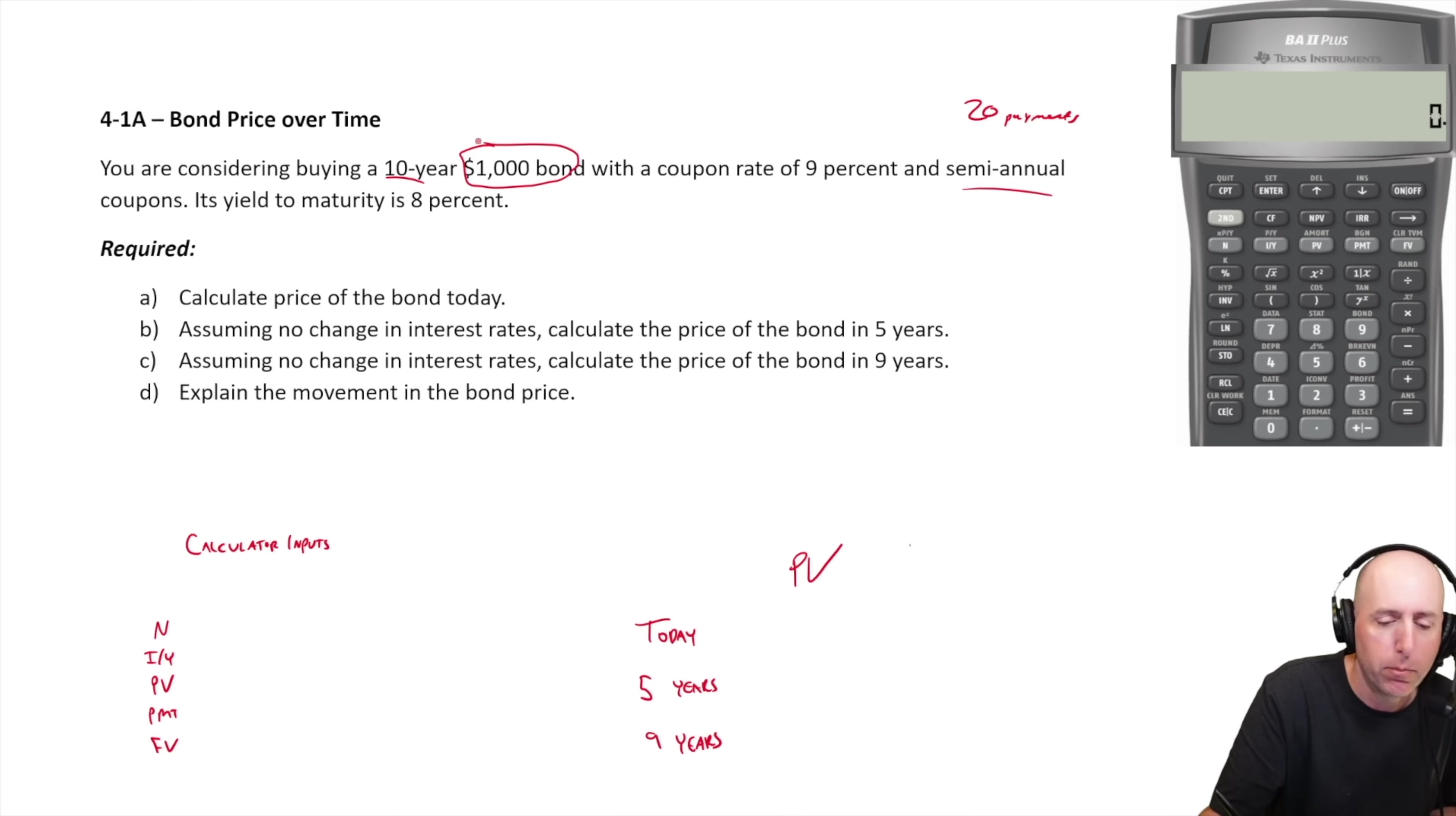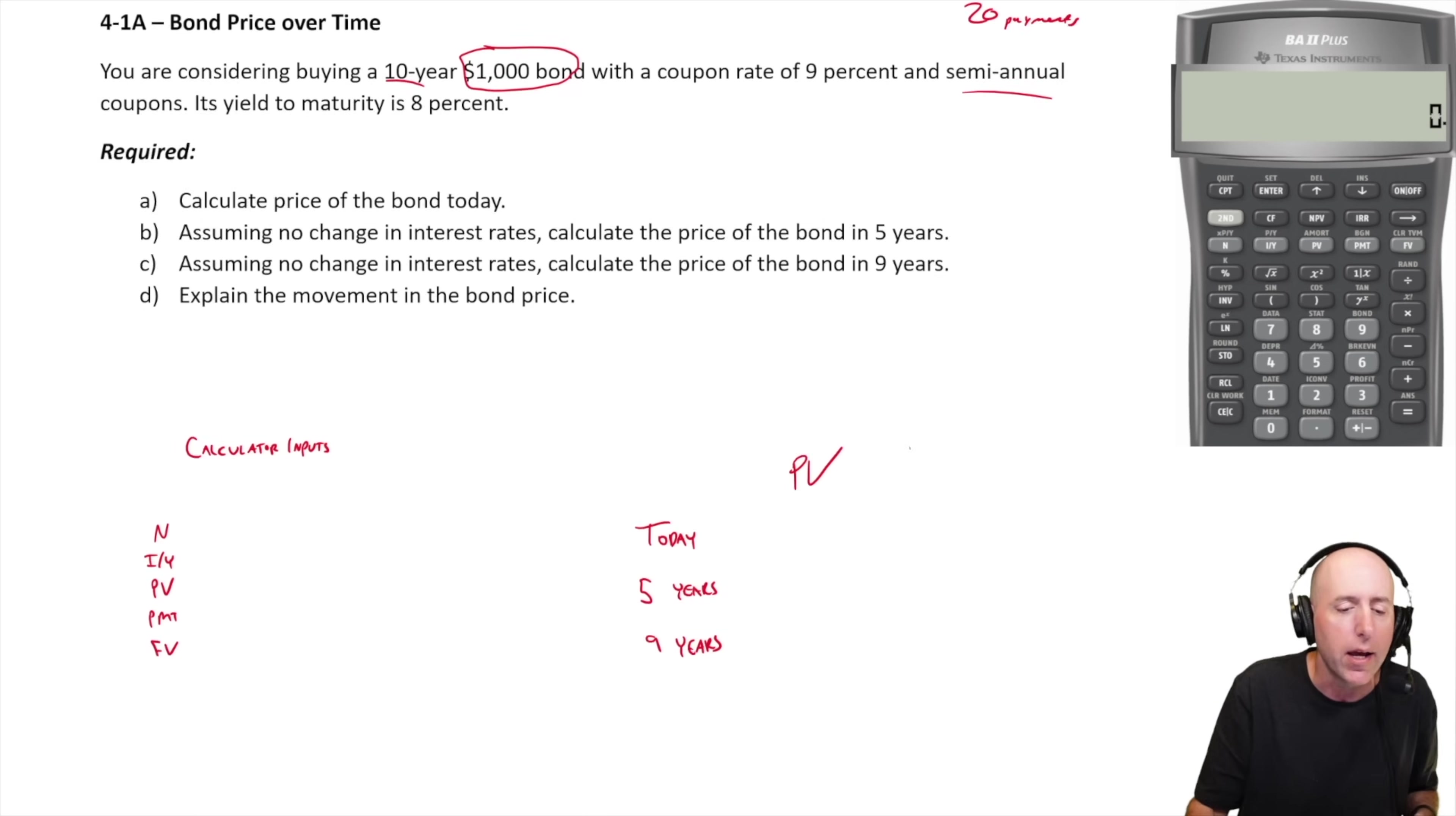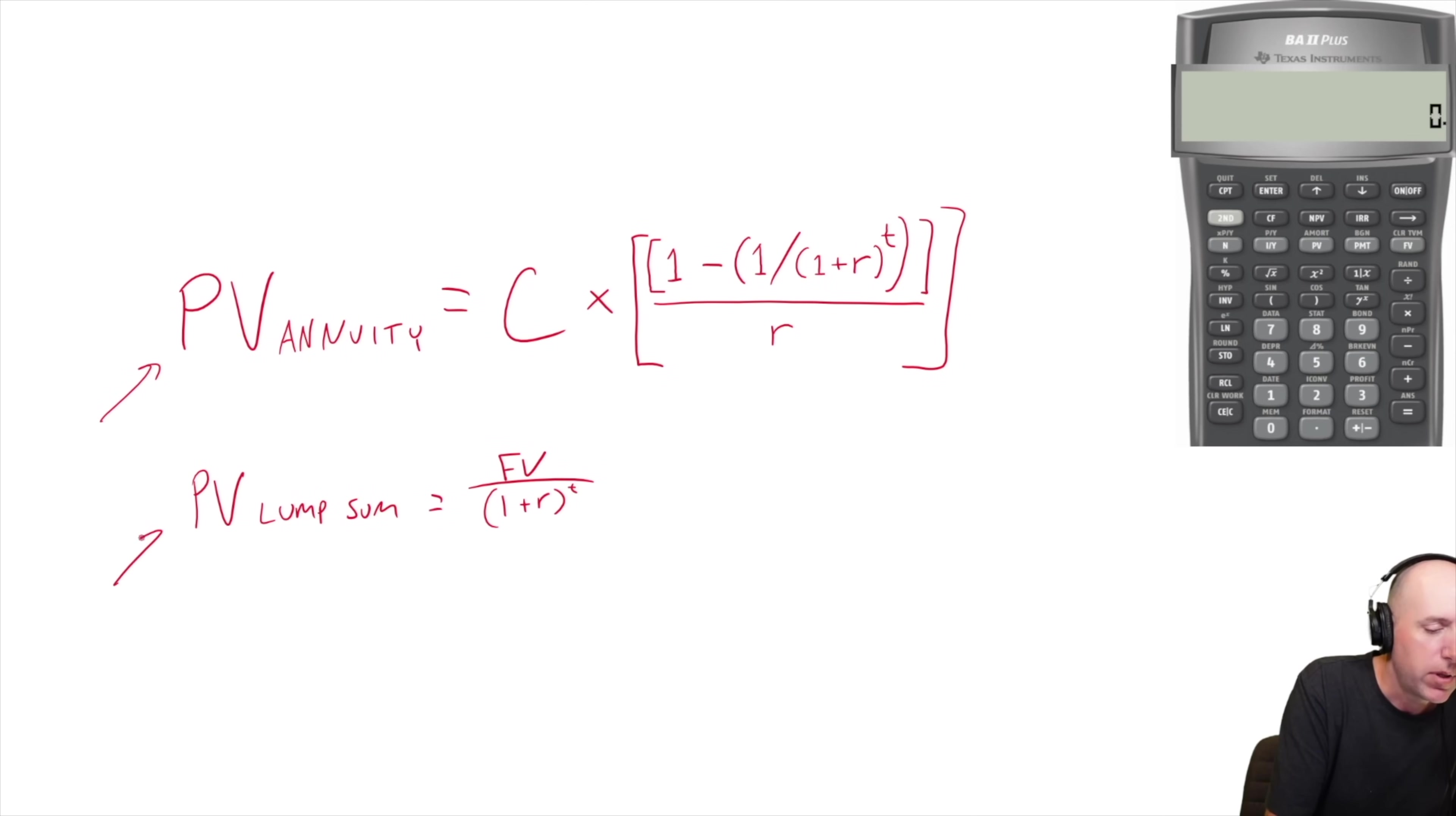And then at the end of it, the borrower, the person you buy the bond from has to pay you back the $1,000. It's a loan. You're loaning them $1,000 and they're making interest payments along the way. And so that's the second piece of this. There's the present value of that $1,000.